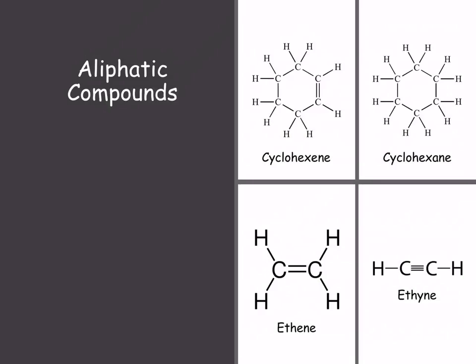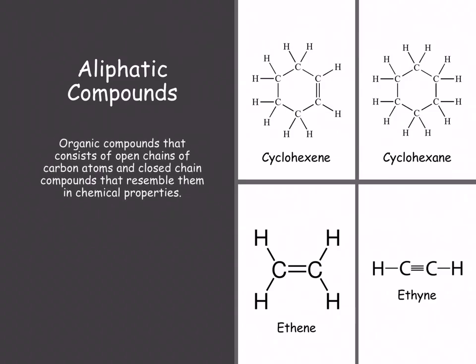Our aliphatics. On the right-hand side, there are four different examples of aliphatic compounds. What are we seeing? We are seeing that they are compounds that consist of both open chains, your ethene and your ethyne, and closed-chain compounds.